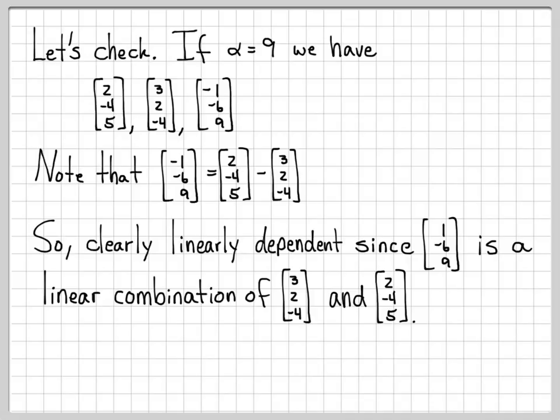So that wraps up this example. Sorry for the little typo here, writing that difference backwards at first. But what we've done is we've solved for the particular value of alpha that forced our augmented matrix to have a family of solutions, which means that these vectors are linearly dependent.